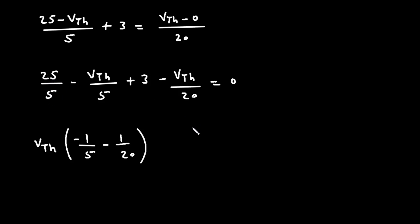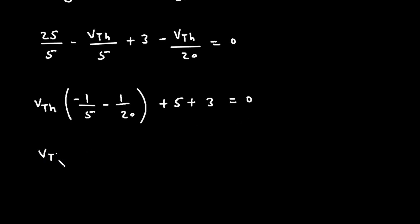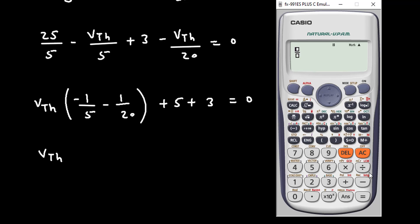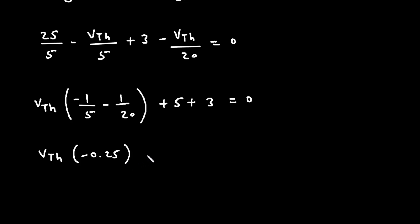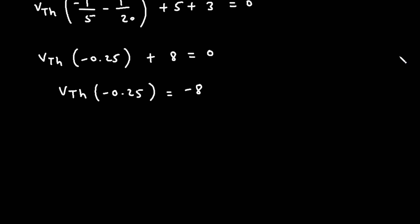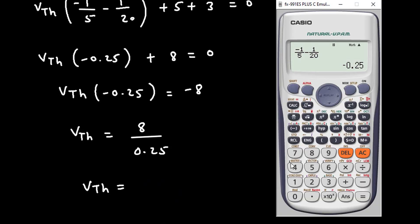And this gives: 5 + 5 + 3 equal to 0 on the constant side. So VTH × (−0.25) plus 8 equals 0. Therefore VTH × −0.25 = −8, and the minus signs cancel, so VTH = 8 / 0.25, which equals 32. So VTH is equal to 32 volts.